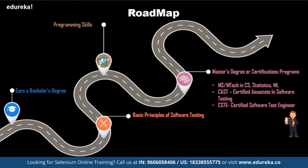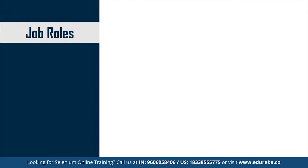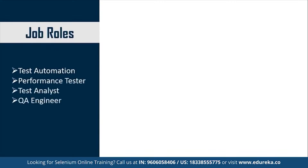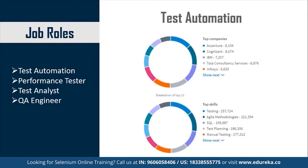Let's have a look at the job roles for a test automation engineer. Some of the most common job profiles include test automation, performance tester, test analyst, and QA engineer. Looking at statistics provided by LinkedIn, some of the big-name companies in test automation are Accenture, Cognizant, IBM, TCS, and Infosys.